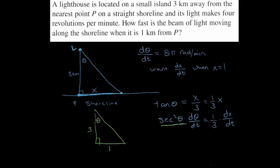Okay, and so now I can take the secant of that angle. The secant of that angle would be root 10 over three, and I'm squaring it, so root 10 over three squared. Now dθ/dt we know is 8π, equals one-third times dx/dt.